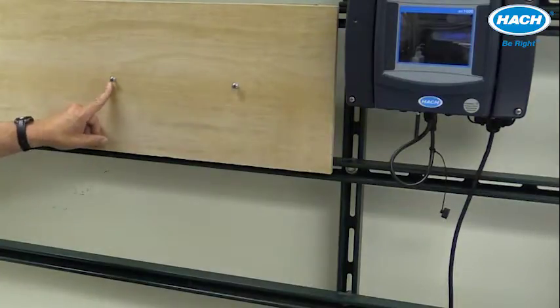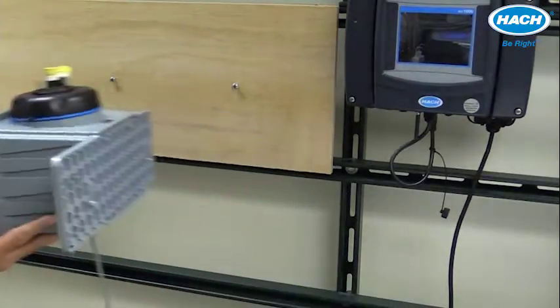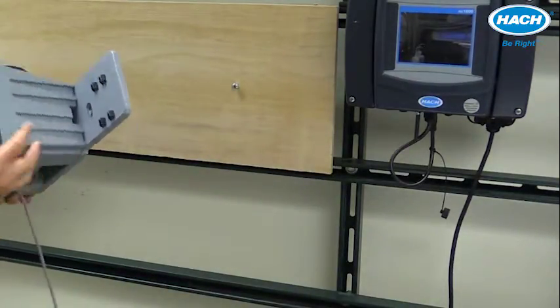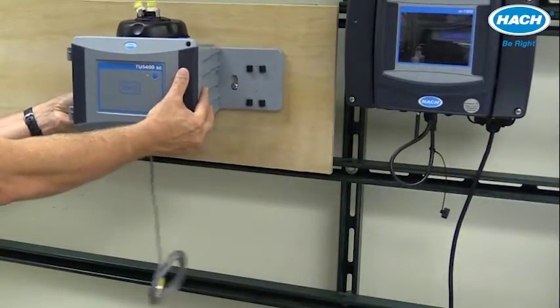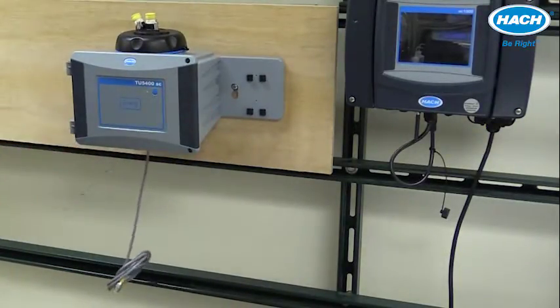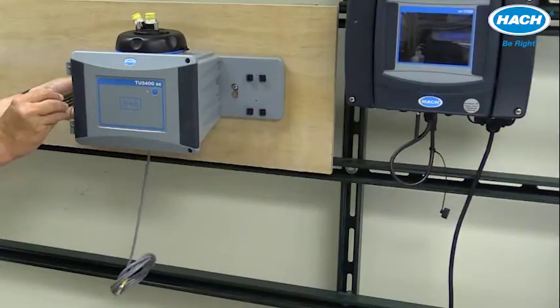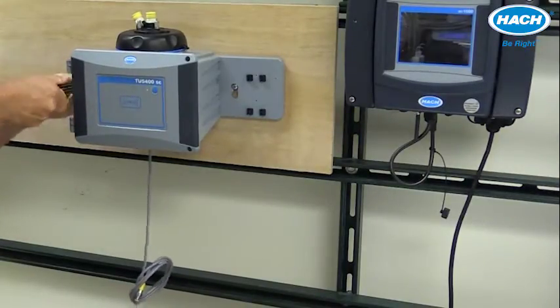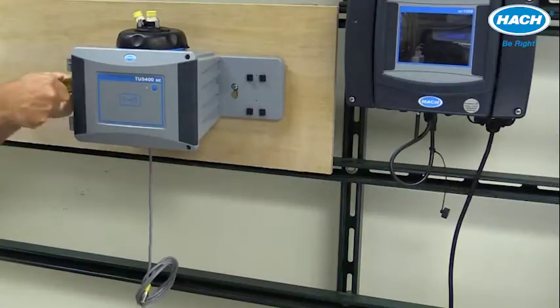The process instrument's mounting bracket will simply slip over the mounting bolts. Using a screwdriver, tighten them to make sure that the bracket and the instrument are firmly attached to the vertical surface.